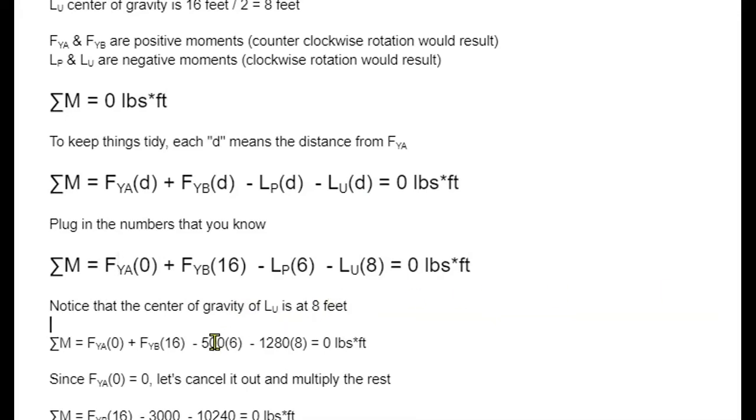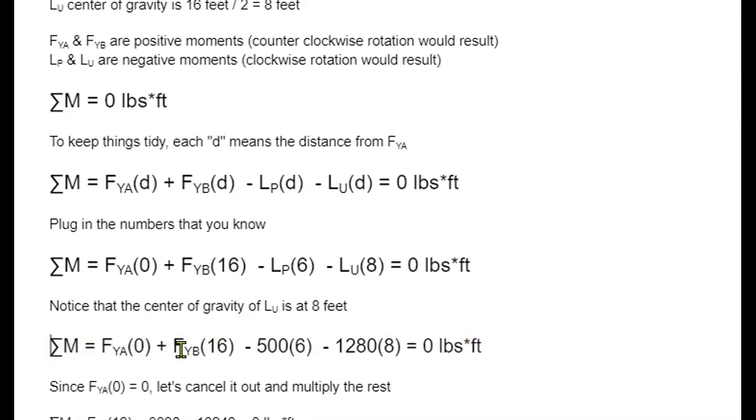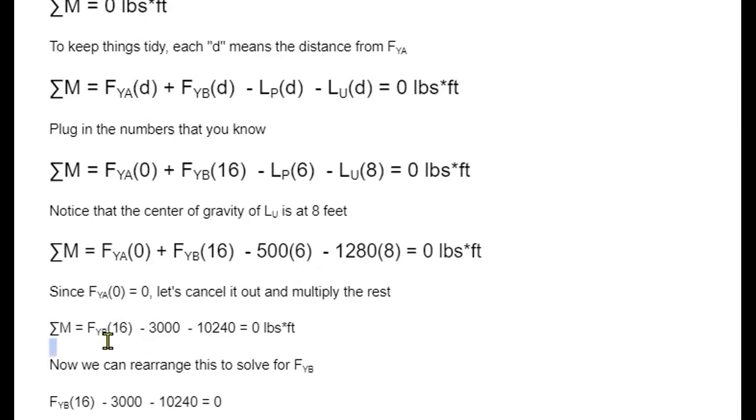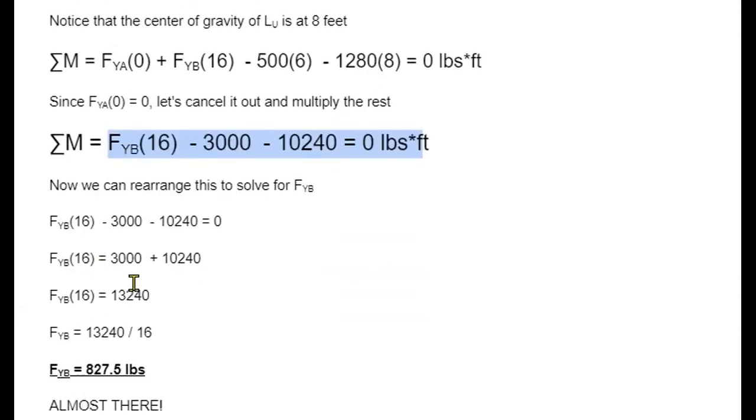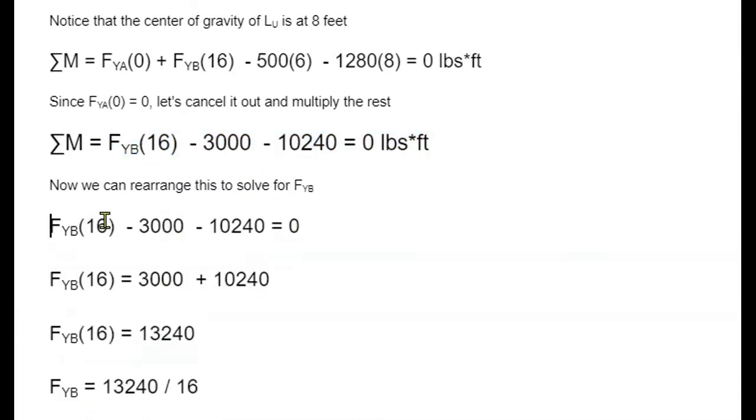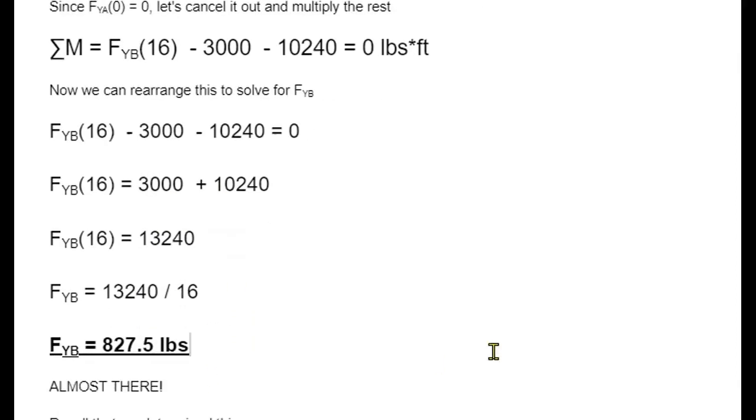Now we plug in the rest of the things that we know. We don't know FYA or FYB, but we do know the point load and the uniform load. Since we're going to multiply the force at point A by zero, we can cancel it out. Now we can solve for the reaction force at point B. We do a little bit of algebra here. We add these numbers to both sides, so they move to the opposite side of the equal. Then we add these two together, and we divide it by 16. The reaction force at point B is 827.5 pounds.